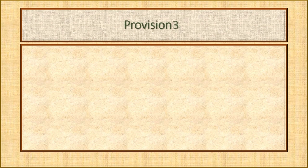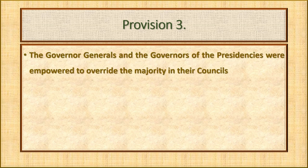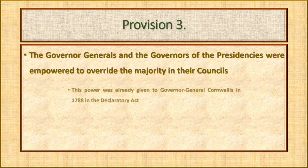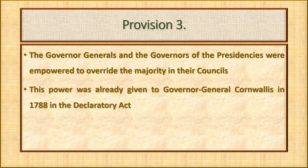As per Provision 3, the governor generals and the governors of the presidencies were empowered to override the majority in their councils. This power was already given to Governor General Cornwallis in 1788 in the Declaratory Act. The number of members in each council was restricted to 3.